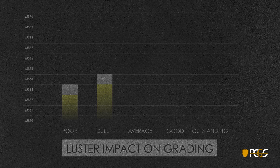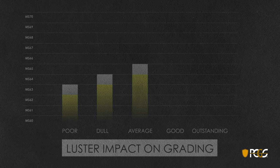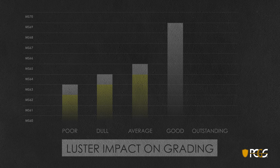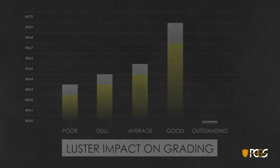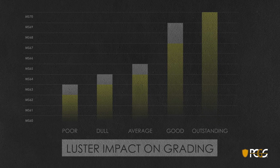Average luster can grade no higher than 65, with most coins limited from 62 to 64 depending on other factors. Good luster can grade up to Mint State 69 and may occasionally boost a coin's grade if it's on the borderline between two grades. A coin with really outstanding luster has no upper limit and can certainly add a point to the grade in some cases.